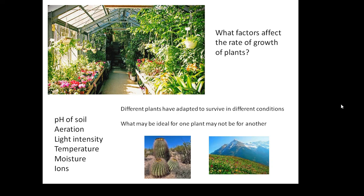Looking at the list: the pH of the soil — different plants prefer acidic, neutral, or alkaline soil. Aeration, which is the amount of air in the soil. Light intensity. Temperature — that depends very much on the plant. Moisture — the availability of moisture. And the ions: the concentration of the ions and what ions are present. These factors could affect the rate of growth of plants.